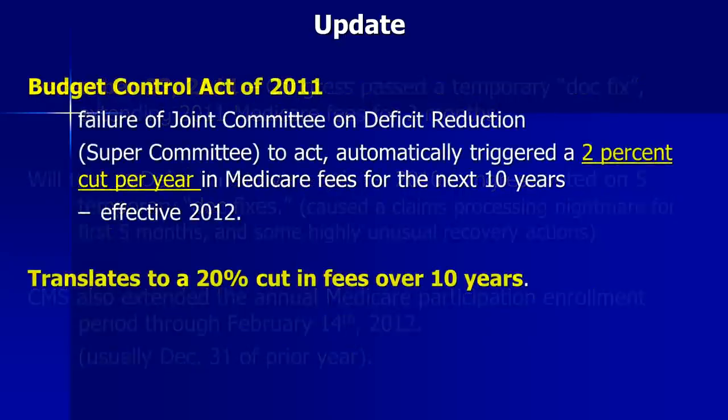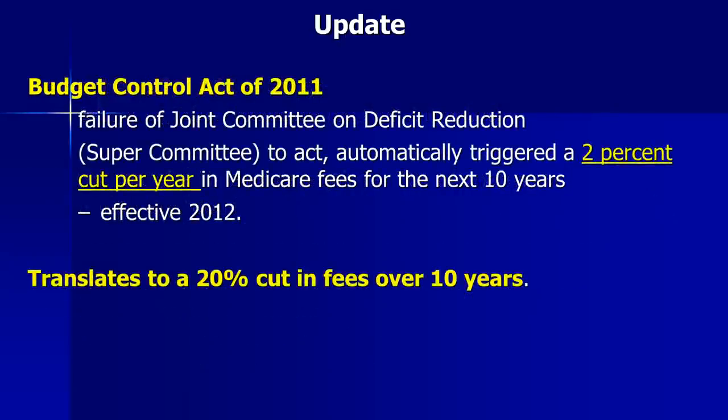The Budget Control Act of 2011, passed in the summer of 2011, stipulated that if the Joint Committee on Deficit Reduction — the Super Committee — failed to come up with something, it would automatically trigger a 2% cut per year in Medicare fees for the next 10 years, effective in 2012. That translates to a 20% cut in physician Medicare fees over the next 10 years.